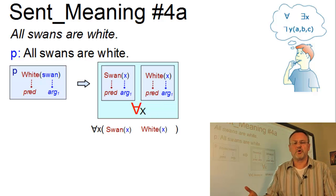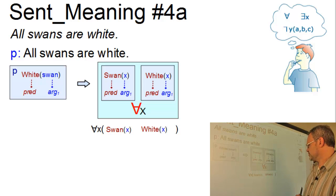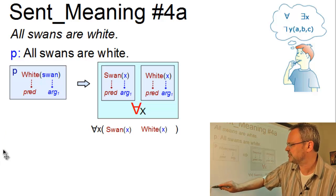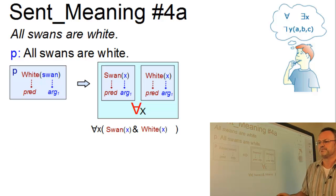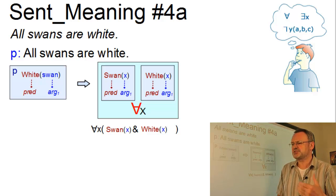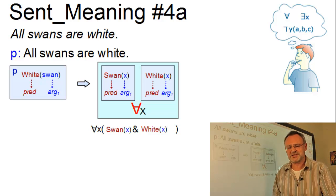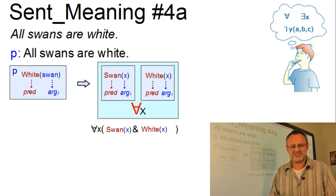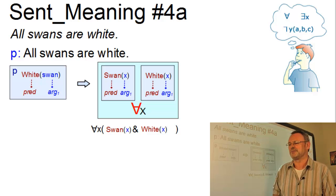And how do we combine the two terms in the bracket? Well, we could try the logical connective AND. Hmm. But this would mean that x is a swan and x is white. In other words, it would mean that all elements x in the universe are swans and all elements x are white. Well, is this what we really want? Not at all.